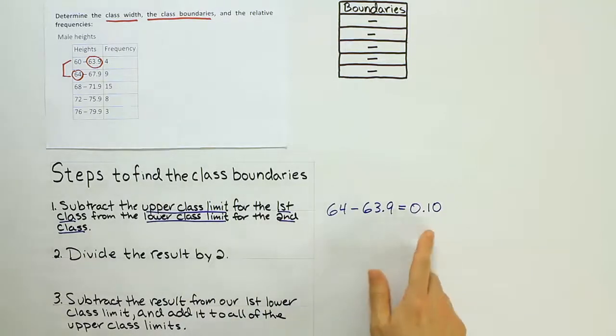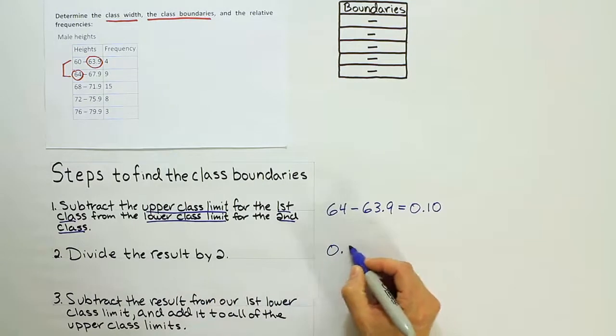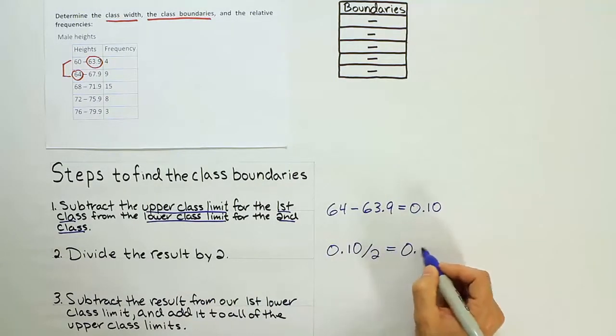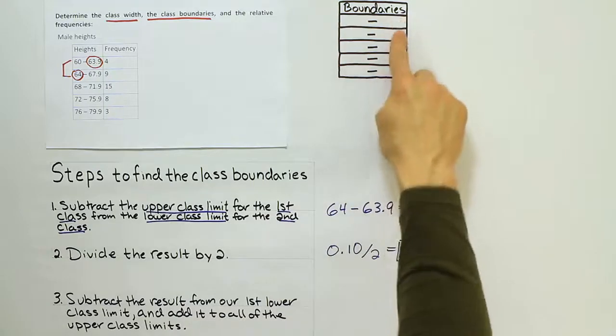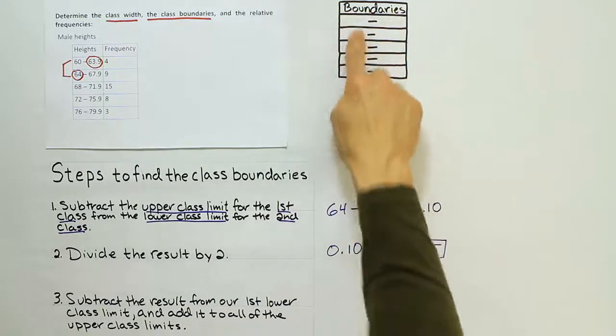Now in the next step, we simply divide the result we found in step 1 by the number 2. So we divide the step here, divide the number here in half. So we're going to have 0.10 divided by 2, which will give us 0.05. Okay, this number here, 0.05, ends up being a very important number because we use it in the third and final step to generate all our class boundaries, which we'll fill in here, which I've made a little place to put them.